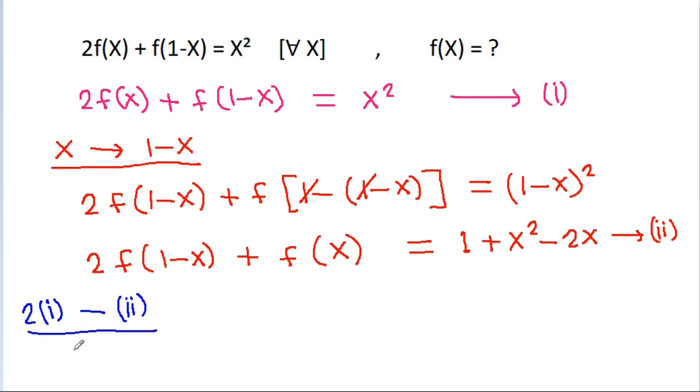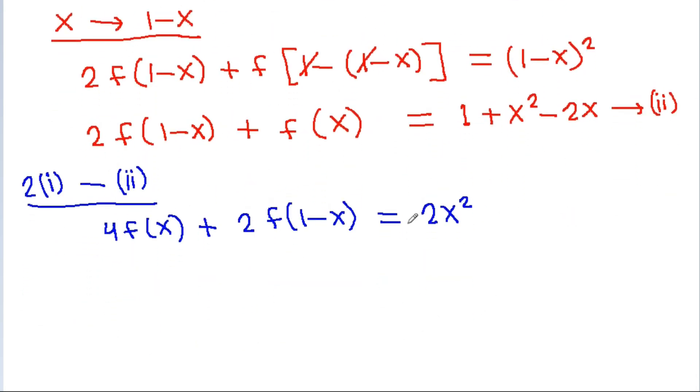then 2 times equation 1 will be 4f(x) + 2f(1-x) = 2x². And equation 2 is 2f(1-x) + f(x) = 1 + x² - 2x.